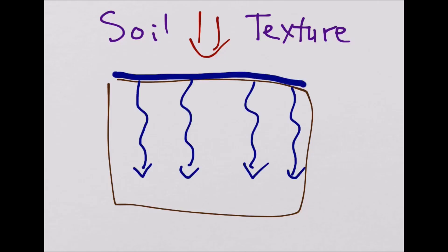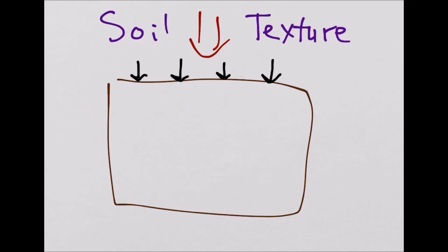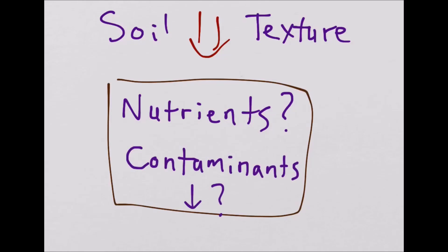plays a huge role in determining how water, air, and even heat move through the soil, how easily compacted a soil is, how susceptible it is to erosion, how well plant roots can push through it, what nutrients can be stored in the soil, and what contaminants can pass through it to our groundwater.